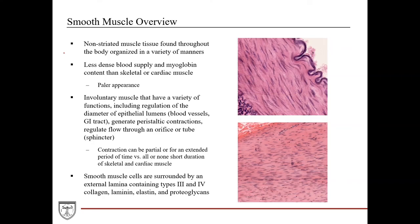So we'll round out our discussion of muscle by talking about smooth muscle. First, an overview. It's non-striated because it doesn't contain sarcomeres, like skeletal muscle and cardiac muscle. It's found throughout the body and organized in a variety of different manners and shapes. It has a less dense blood supply and as a result less myoglobin than skeletal or cardiac muscle, which contributes to a paler appearance. The big thing about smooth muscle is it's involuntary — we have no conscious control over it. It's controlled by the autonomic nervous system.